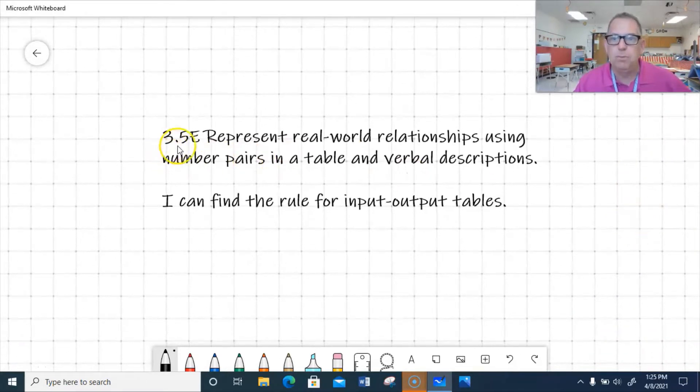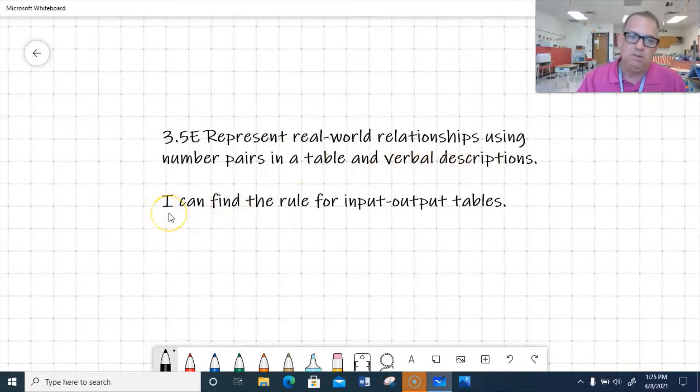The specific skill we're going to talk about is 3.5e, and that's to represent real-world relationships using number pairs in a table and verbal descriptions. And the I can statement is, I can find the rule for input-output tables. I'm going to be working with input-output tables today.